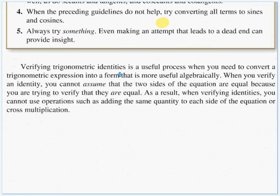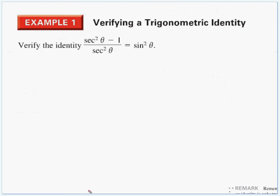Verifying trig identities is a useful process when you need to convert a trig expression into a form that is more useful algebraically. When you verify an identity, you cannot assume that the two sides of the equation are equal because you're trying to verify that they are equal. As a result, when you verify identities, you cannot use operations such as adding the same quantity to each side or cross-multiplying. Pick a side and stick with it.